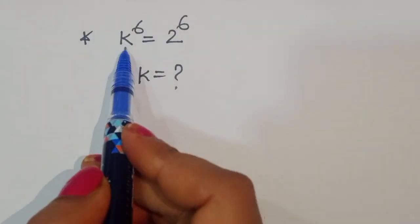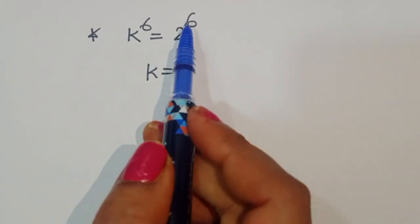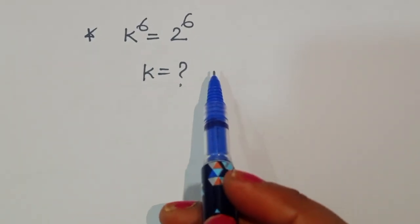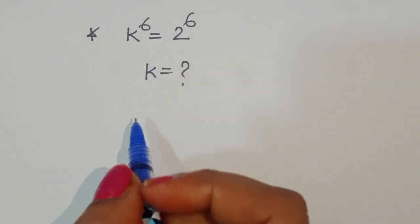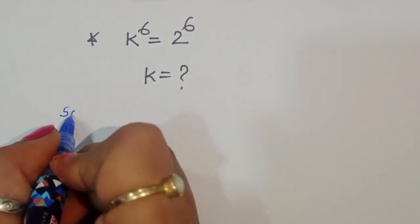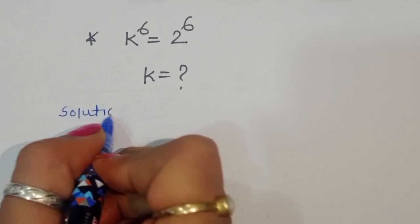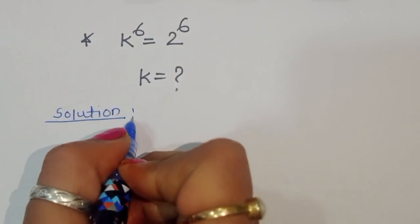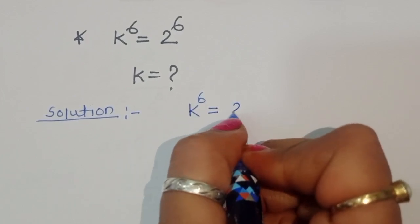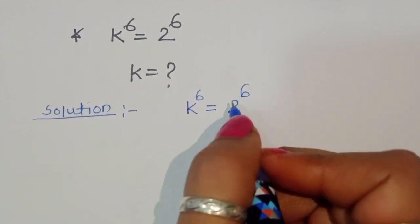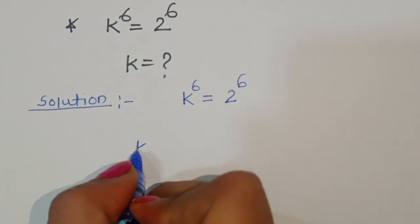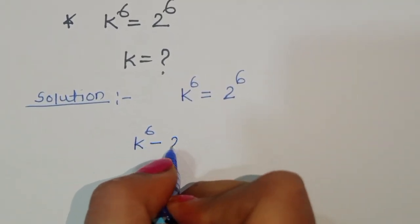The question is: given k^6 = 2^6, we have to find the value of k. Let's see the solution. We can write this as k^6 - 2^6 = 0.